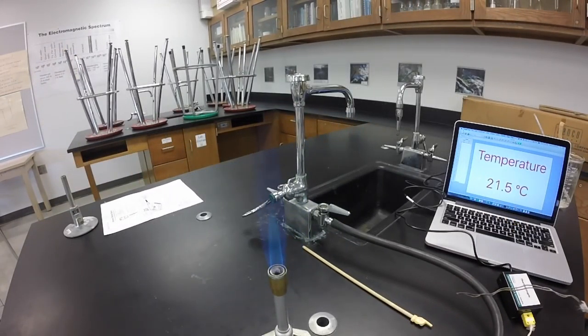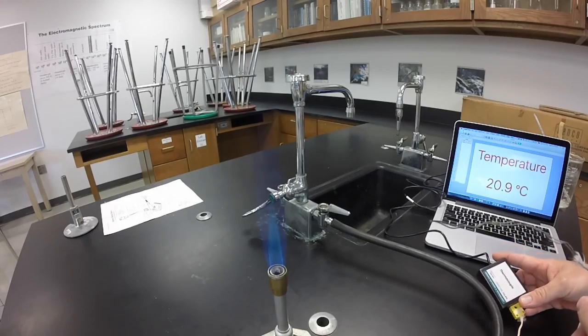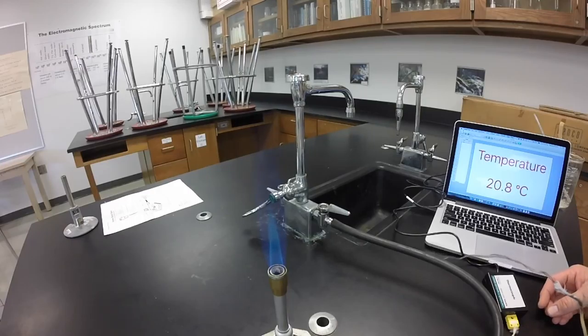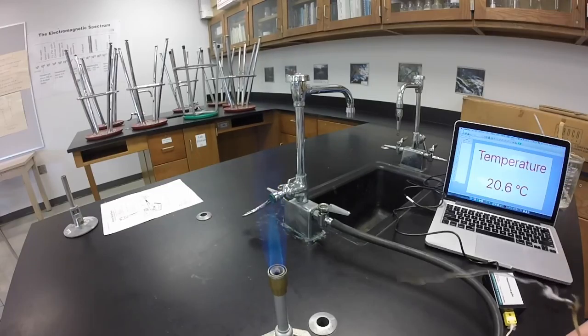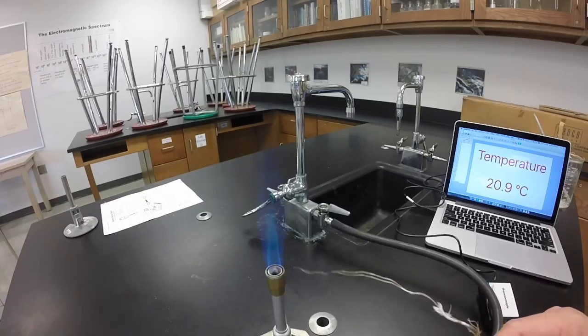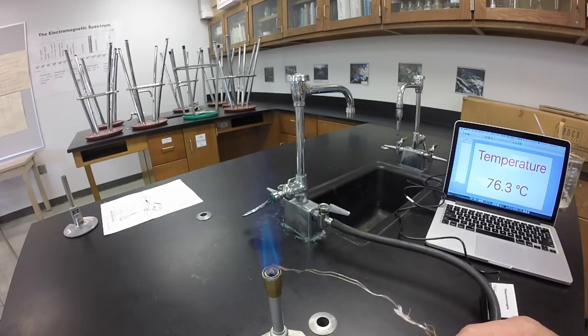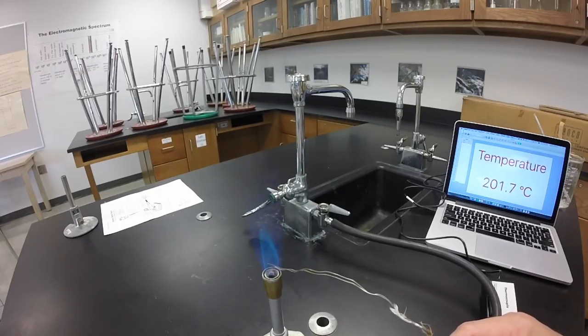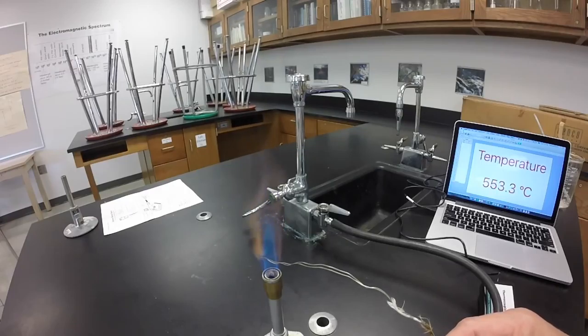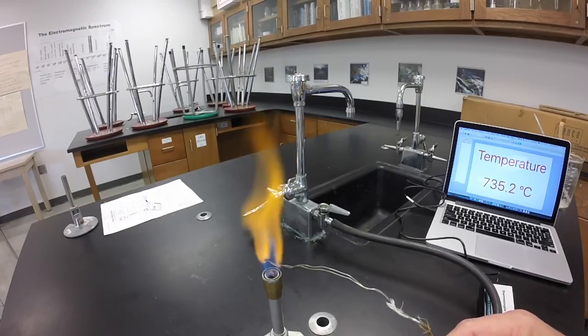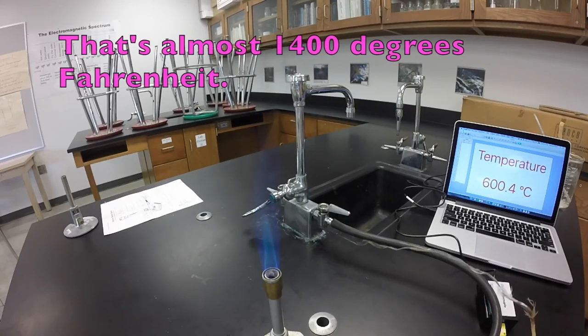Let's talk about the temperature of the flame generated by the Bunsen burner. Here I have a thermocouple, a temperature probe basically. And it's recording room temperature, which is about 21 to 22 degrees Celsius. You'll see that on the screen. I'm going to put the tip of the thermocouple, the wires, into the inner blue cone. And you can watch and see what happens to the temperature. There we go. So we're at about 740 degrees Celsius.